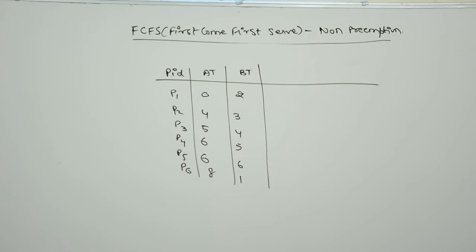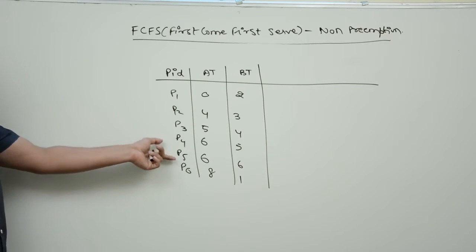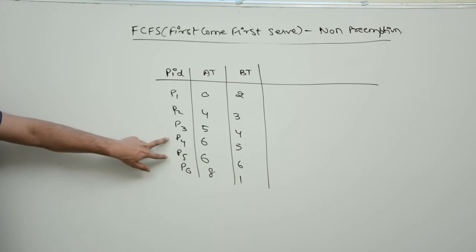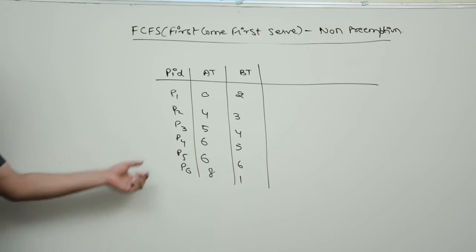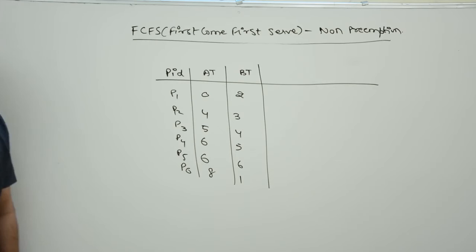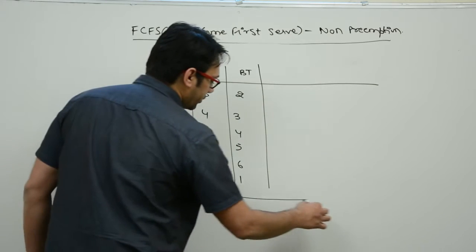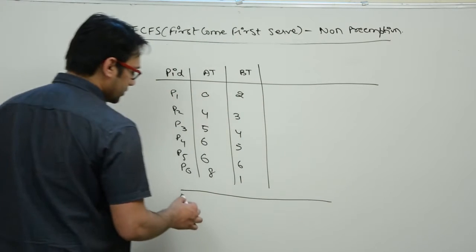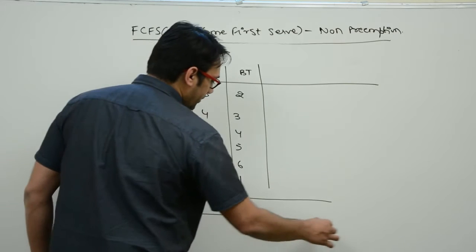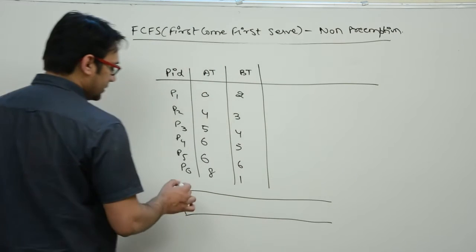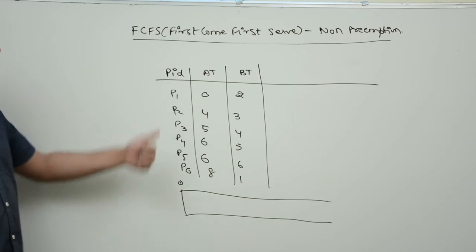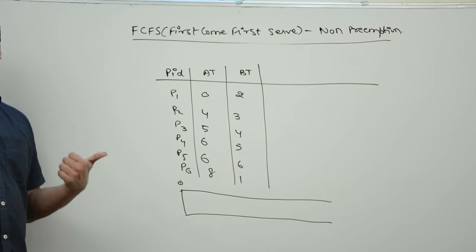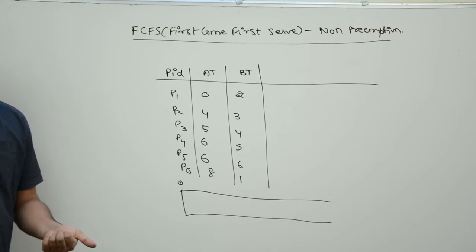Let us find the average waiting time and the average turnaround time. Here I have taken two processes having the same arrival time — we will see what we should do in that case. This is the Gantt chart starting at time 0. At time 0, only one process has arrived in the ready queue.